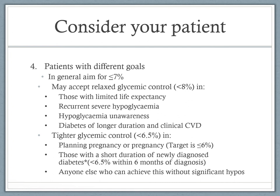For tighter control, patients who are planning pregnancy or are currently pregnant should have a HbA1c target of less than or equal to 6%. Those with a short duration of newly diagnosed diabetes should aim for a HbA1c of less than 6.5% within the first six months of diagnosis. And essentially anyone else who can achieve good glycemic control without having significant hypoglycemia or side effects.